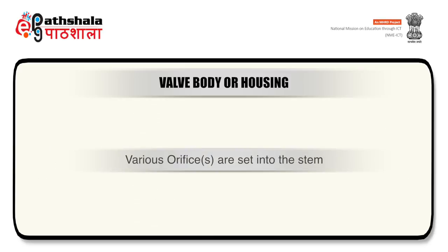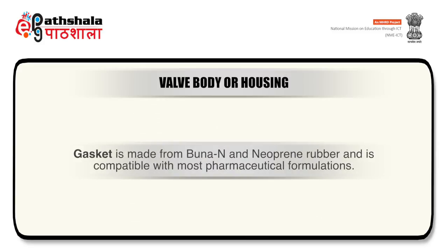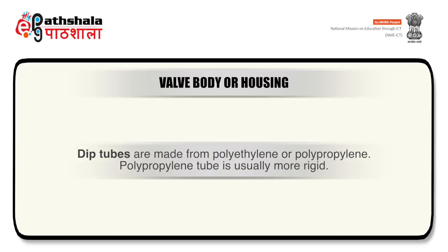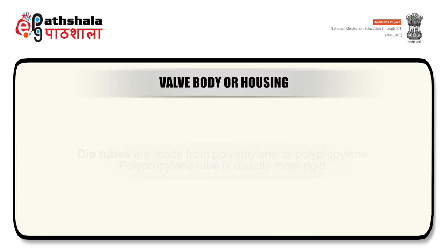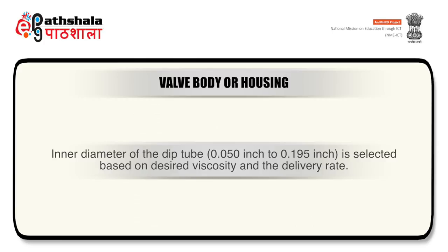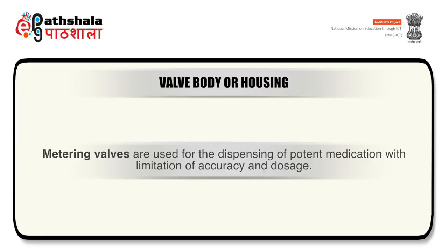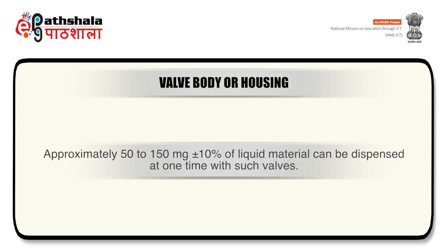Various orifices are set into the stem. The gasket is made from butyl and neoprene rubber and is compatible with most pharmaceutical formulations. Dip tubes are made from polyethylene or polypropylene; polypropylene tubes are usually more rigid. Inner diameter of the dip tube is selected based on desired viscosity and delivery rate. Metering valves are used for dispensing of potent medication with limitation of accuracy and dosage.